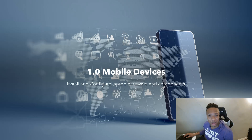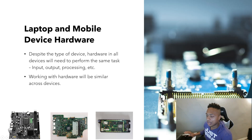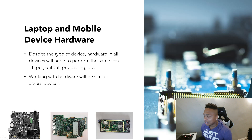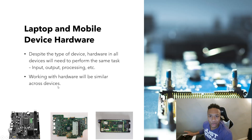I'm sure everybody knows what a laptop looks like. Laptops and mobile device hardware — as you can see at the bottom of the screen we have three motherboards: a desktop motherboard, a laptop motherboard, and a motherboard for a phone. If you notice, they all look very similar despite the type of device. Laptop, phone, desktop — they're all very similar. Even devices in dishwashers and cars have something like this. Every device has to process things, take input, and give output.